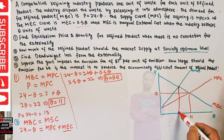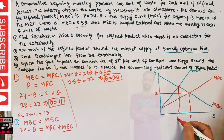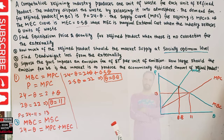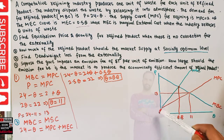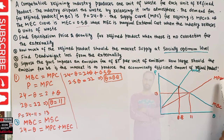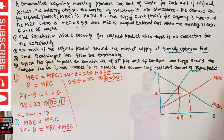So the socially optimal level of output, when we take into consideration the marginal external cost, is Q = 8.8. On the graph, the marginal social cost curve has the same intercept as the MPC but a steeper slope. The socially optimal point is where the marginal social cost intersects the marginal benefit curve, and at that point we produce 8.8 units.